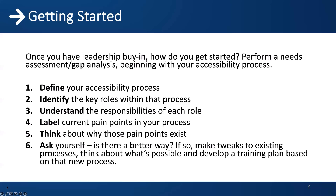Identify current pain points in your process. You may not have a process and may be creating one from scratch — that's okay. But if you have a process, try to find the pain points. Look at your accessibility audits: in what phase of the process are you finding issues? Are they related to how the functionality, page, or content was developed, or to another part of the process like design? Think about why those pain points exist — are they knowledge or motivation gaps? Knowledge gaps can be solved by training, but motivation gaps require a culture change, addressed through training and raising awareness about why we do this work. Always ask yourself, is there a better way? If so, make tweaks to the existing process and train based on that new process.